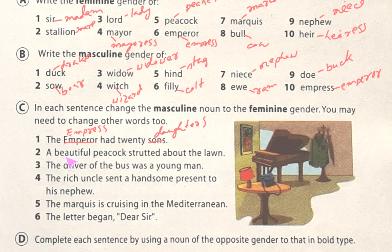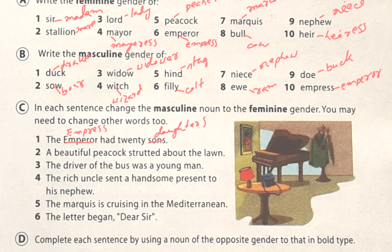Next one: 'A beautiful peacock strutted about the lawn.' Here, peacock is masculine, so we will change it to peahen: 'A beautiful peahen strutted about the lawn.'